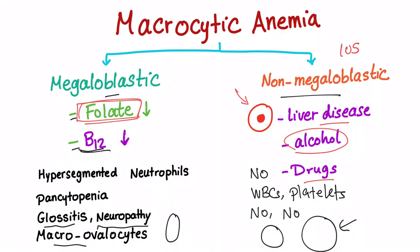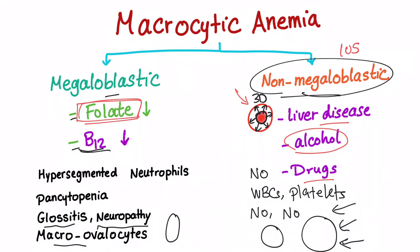In liver disease, you will see target cells. Why are they target-shaped? There are excessive membrane lipids that expand the RBCs, causing this target lesion — remember, this is three-dimensional in real life. In liver disease, the lifespan of RBCs is not decreased; they are just big red blood cells. In non-megaloblastic anemia, sometimes you don't even have anemia symptoms — you just have big RBCs, but you're otherwise fine.